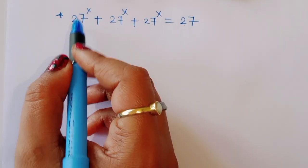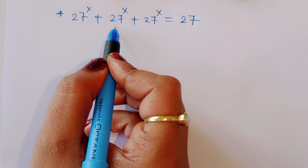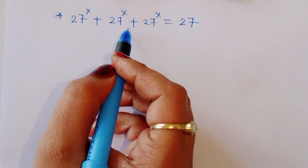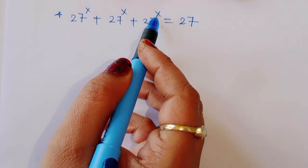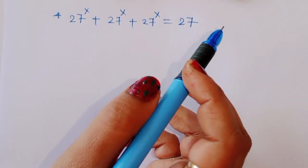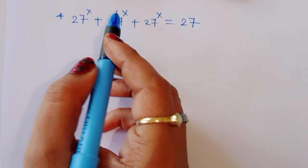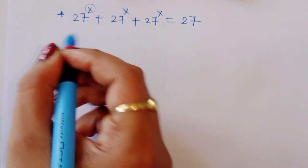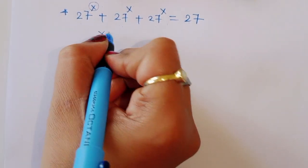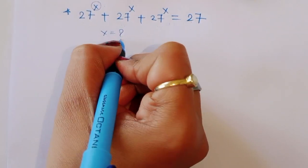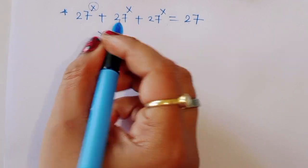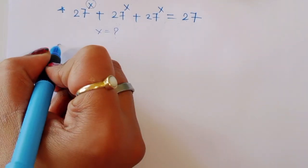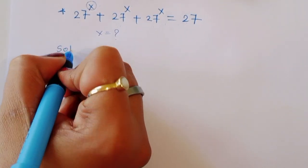The question is: 27 raised to x plus 27 raised to x plus 27 raised to x is equal to 27. We have to find out the value of x. Let's see the solution.